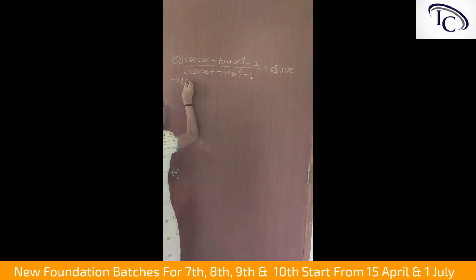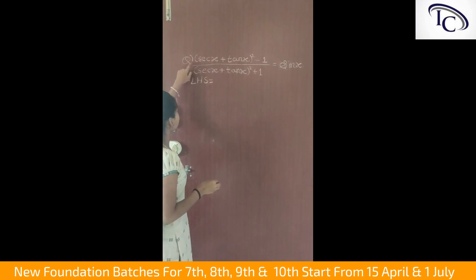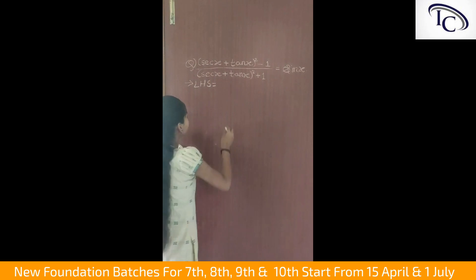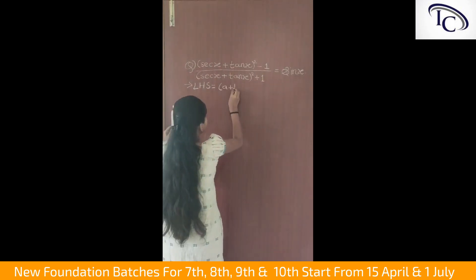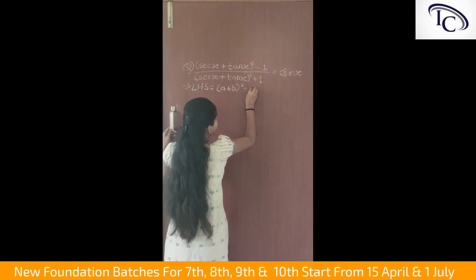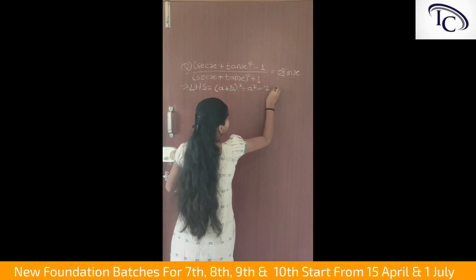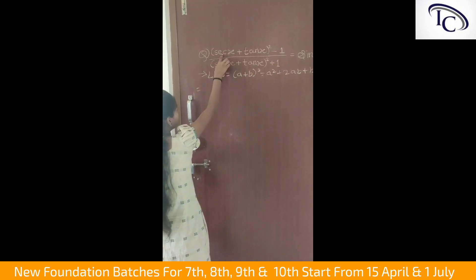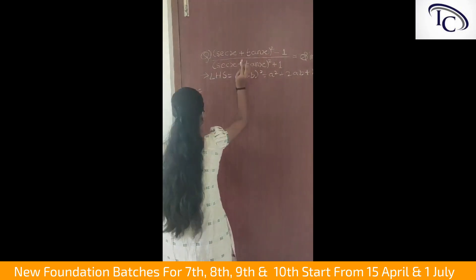So let's solve the problem. To solve the problem, first of all you can see here, the numerator and denominator is sec x plus tan x bracket square. So we can use a plus b bracket square formula which is a square plus 2ab plus b square. Here we are going to consider sec x as a and tan x as b.